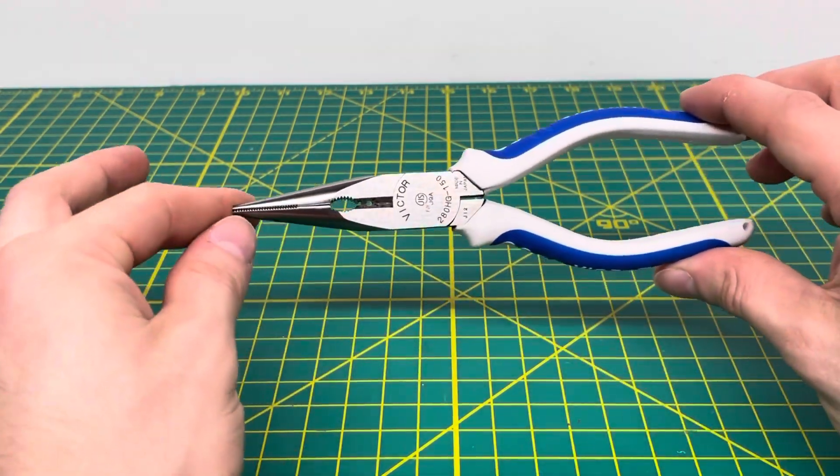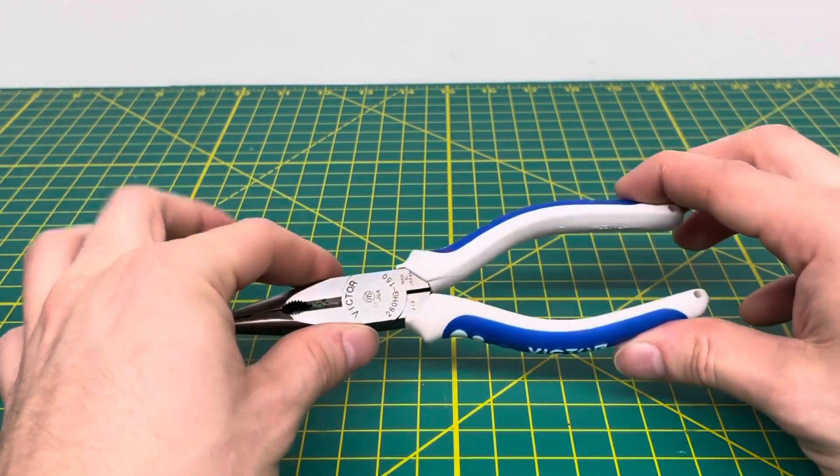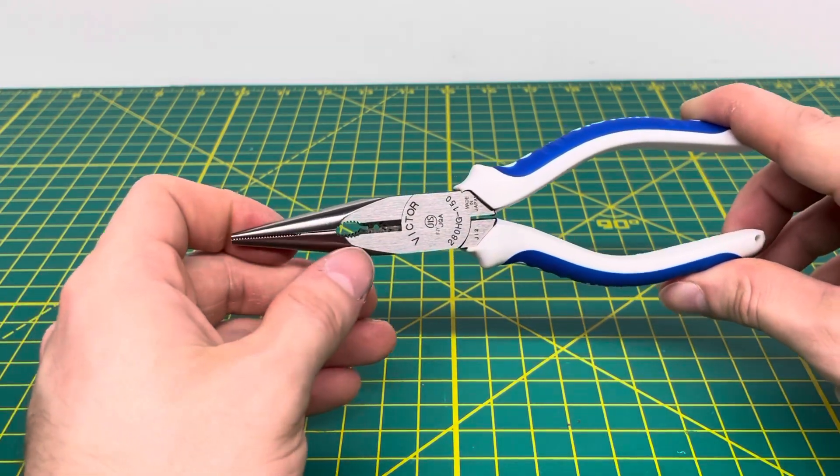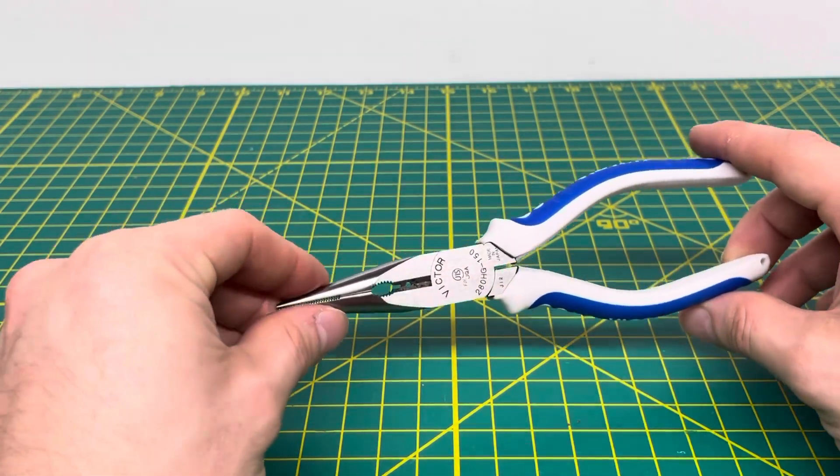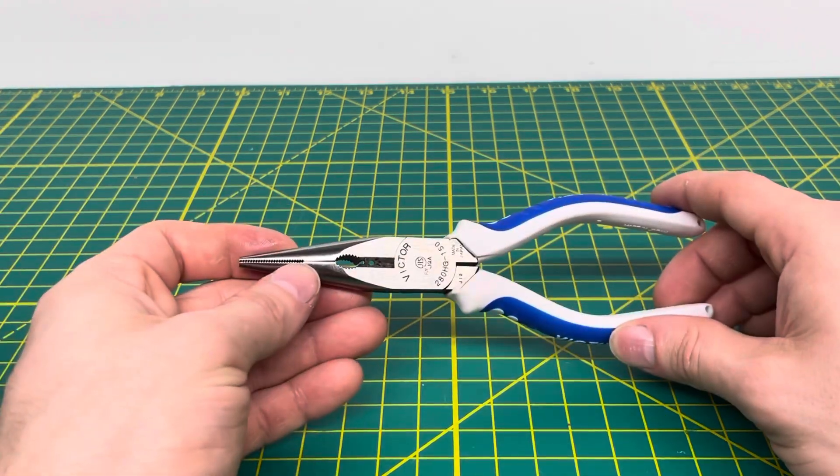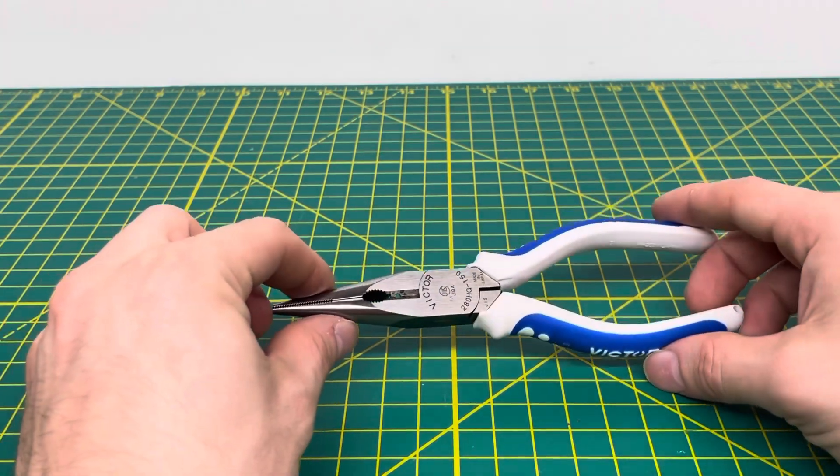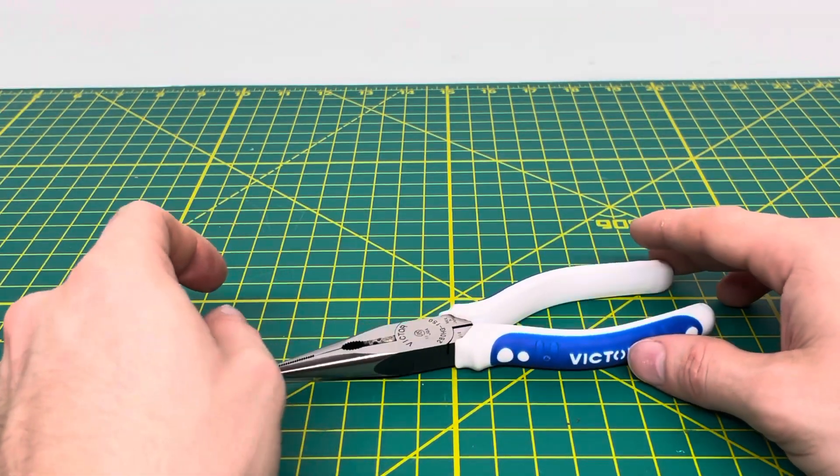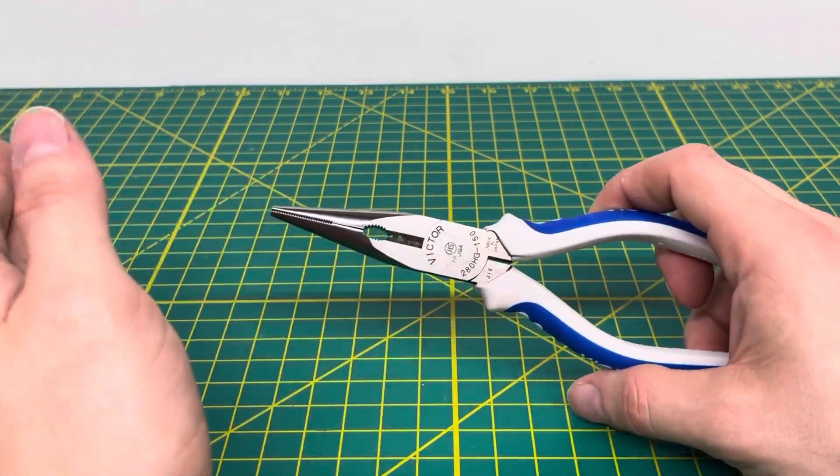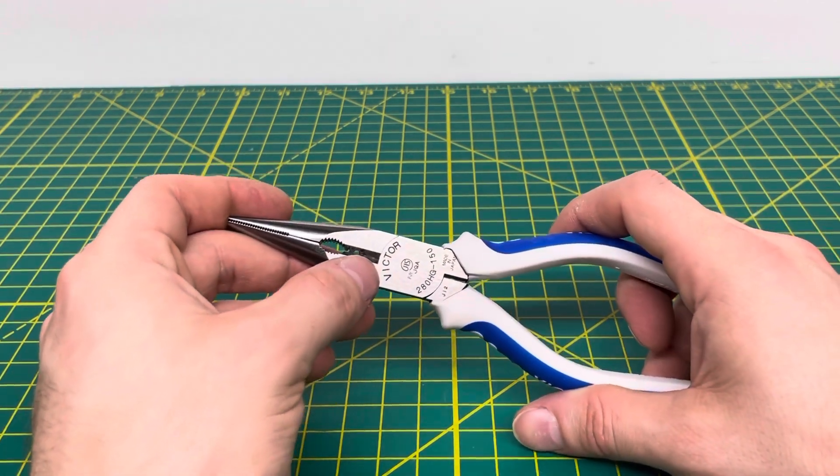So overall, these are definitely a nice pair of pliers from Victor. Definitely could highly recommend these to anyone looking for a pair of needle nose pliers that is going to last them quite a bit of time. Now, I believe the only place you can currently get these is off of Amazon, if I'm not mistaken. That's where I bought mine. I will try to find the link to this tool and link it down in the description below if you'd like to pick yourself up a pair of these.